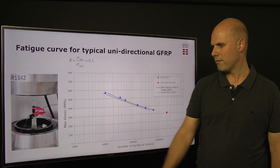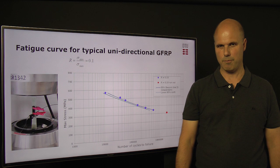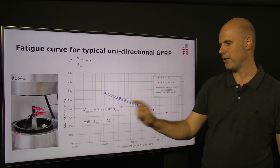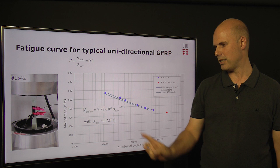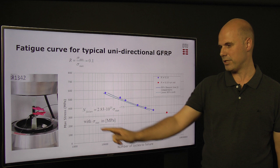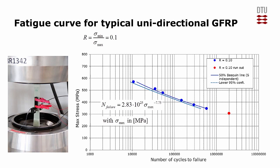There is one extra test — a run-out test — where we tested at a stress level but did not get failure until the point where we stopped the test. For these data points, we fit a curve that normally takes the form: N_failure = C × σ_max^(-k), where N is the number of cycles to failure, σ_max is the maximum stress in megapascals, and C and k are constants. This experimentally determined relation for a specific composite material can then be used to predict the number of cycles for a given stress level.